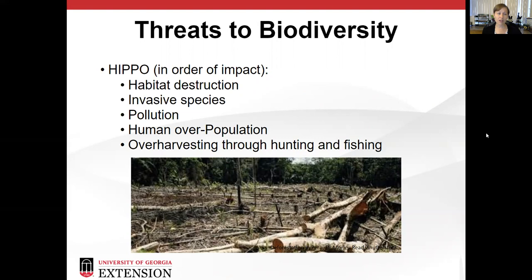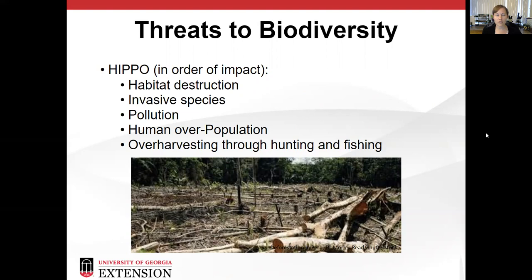Second in ranking is invasive species — we have a program specifically on invasive species in this series. Pollution is third, and today we'll look at pollution primarily coming from your landscape or home. Human overpopulation is next in order, and then overharvesting through hunting and fishing. Overfishing is a big issue globally as well as nationally, and hunting as well — overharvesting in general of our wild resources.